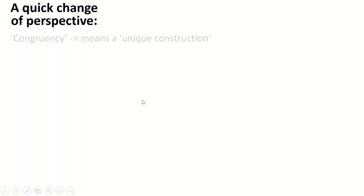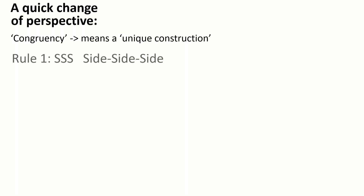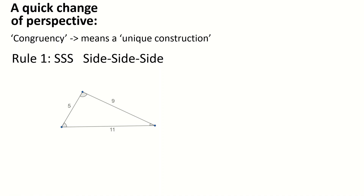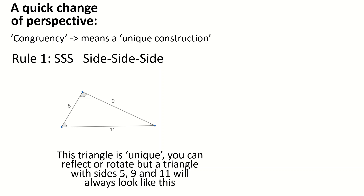A quick change of perspective before I do, or a clarification at least. When I say congruency, what I mean is a unique construction. So, for example, when I say SSS is a congruency law, what I'm saying is that a triangle with all three sides known is a unique construction. If you have a triangle of sides 5, 11, and 9, this is the only way to draw it. Sure, you could reflect it, rotate it, or move it around, but you're going to be drawing the same triangle, which means this is a congruency law because it's a unique construction.